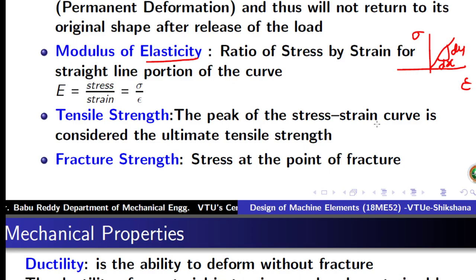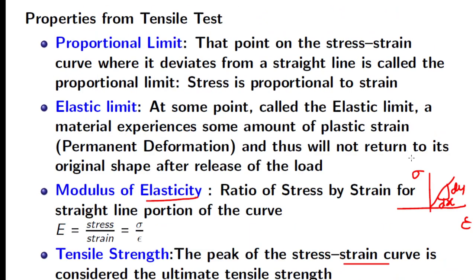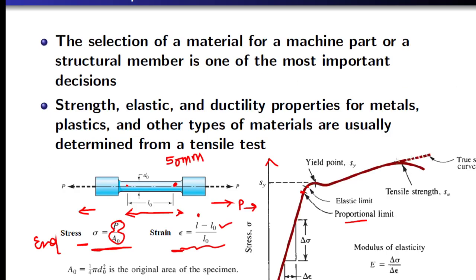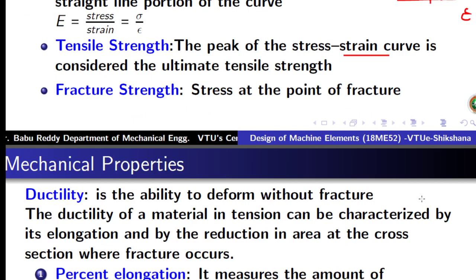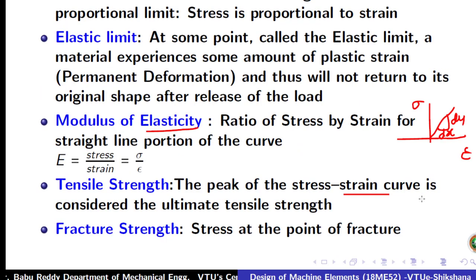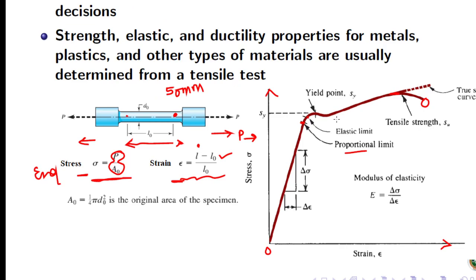Tensile strength is the peak of the stress-strain curve and is referred to as the ultimate tensile strength (UTS). The stress at which the material fails is called fracture strength. The yield point is the point at which the material begins to yield — the load is held constant but the material starts deforming on its own. The length of the specimen increases even without increasing the load, and this behavior is called yielding. The stress value at which this occurs is called the yield point.